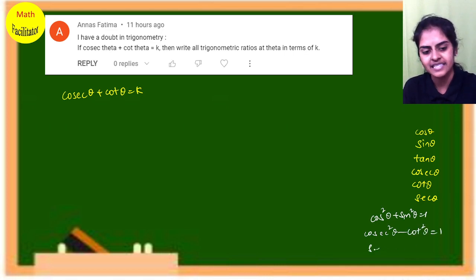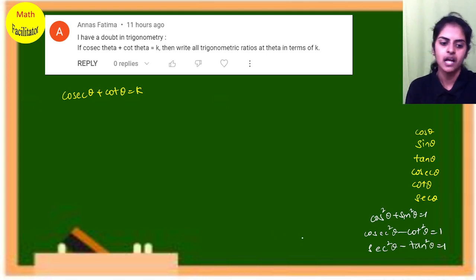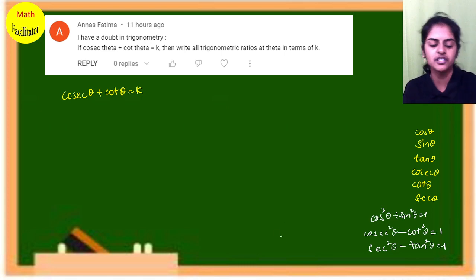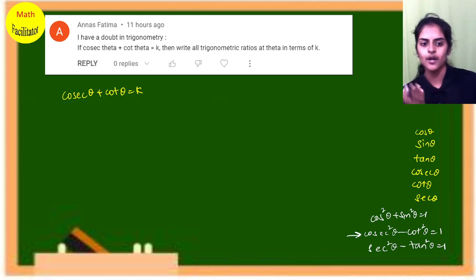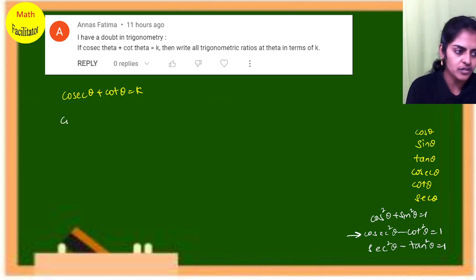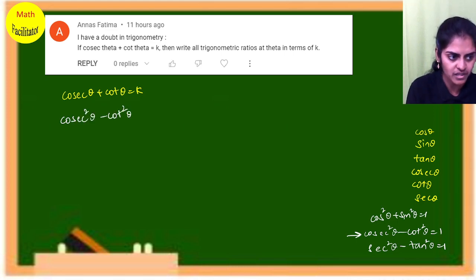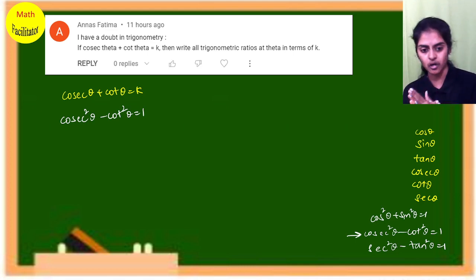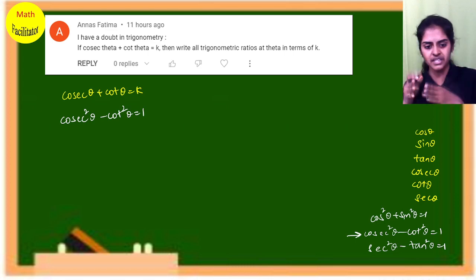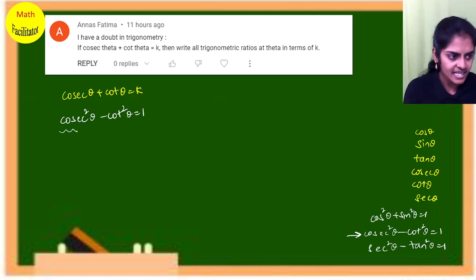Out of these three, this second identity has cosecant and cot, and the given question also has cosecant and cot. So I have chosen the second identity: cosec²θ − cot²θ = 1.